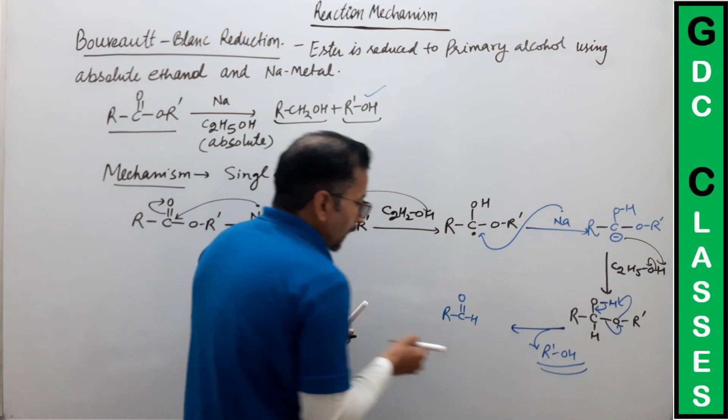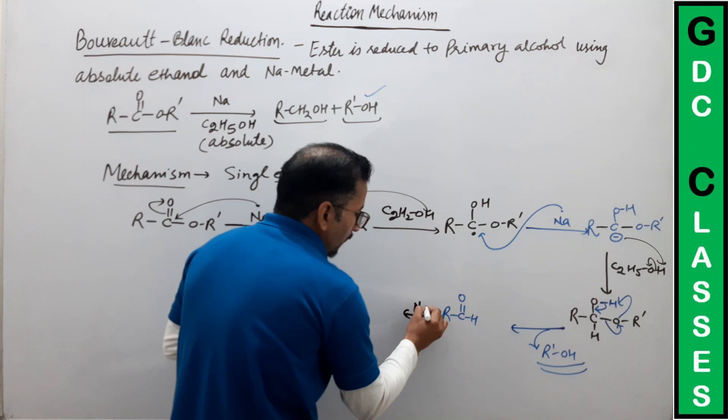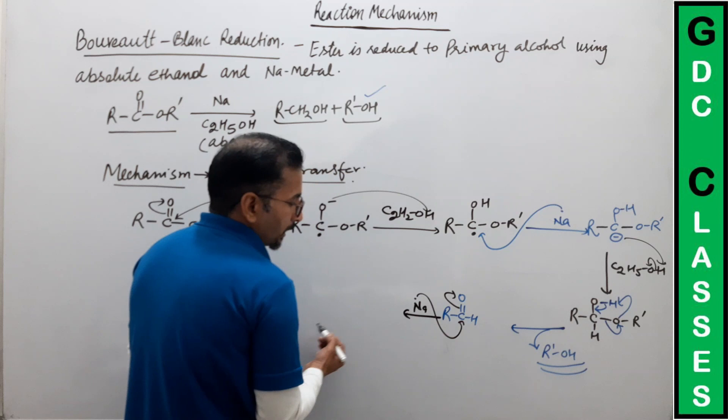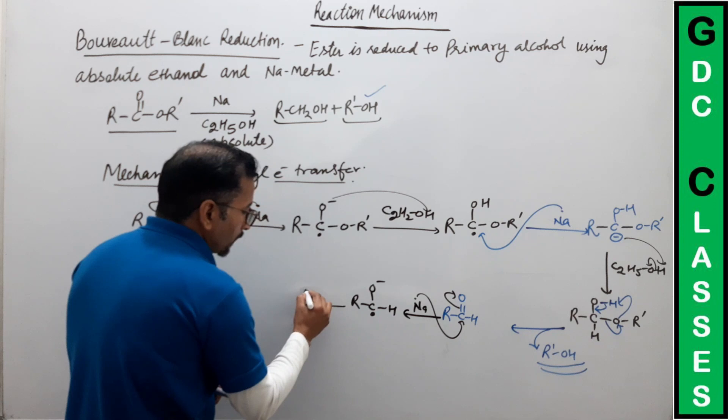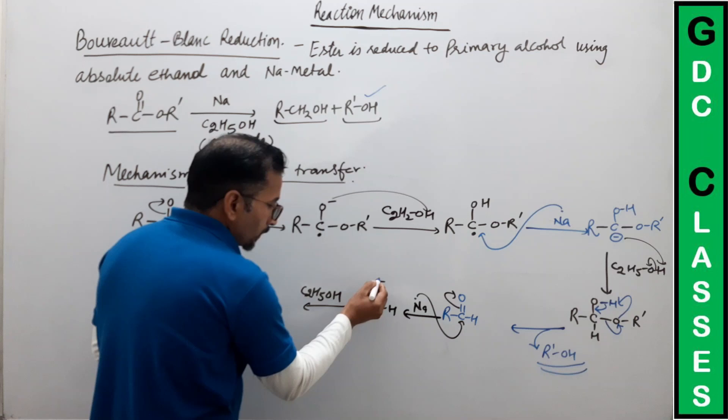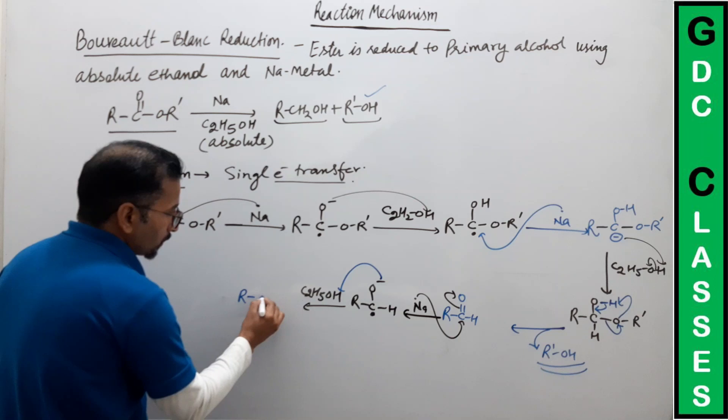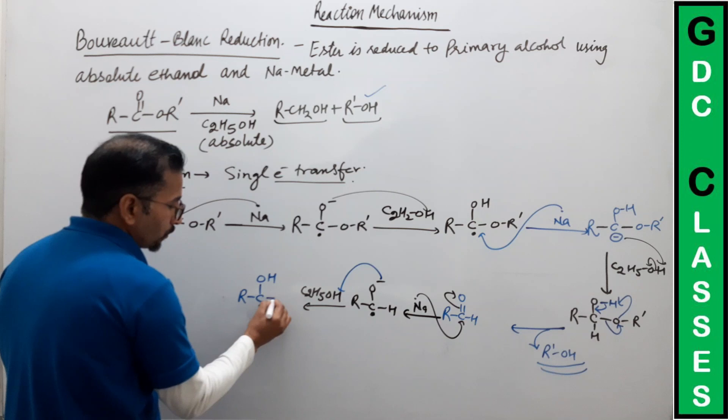अब फिर से sodium metal आएगा और एक electron carbonyl carbon को देगा। जैसे ही यह देगा, bond आगे shift हो जाएगा। Condition बनेगी: oxygen पर negative, और carbon पर radical आ चुका है। Next step में C₂H₅OH proton देगा इस oxygen को।